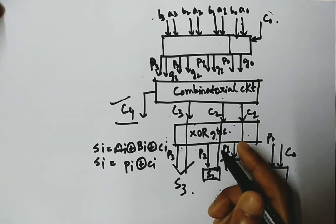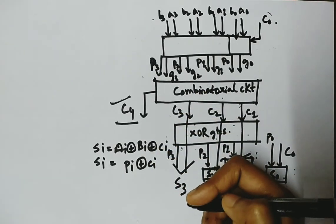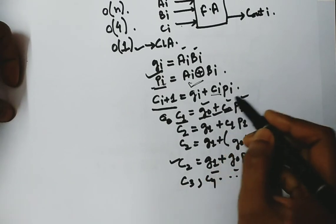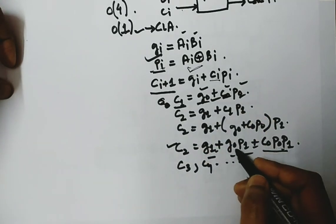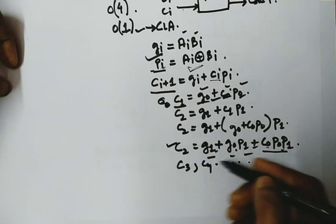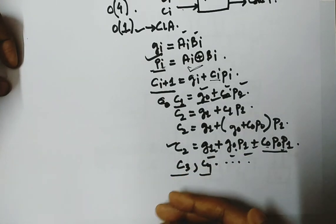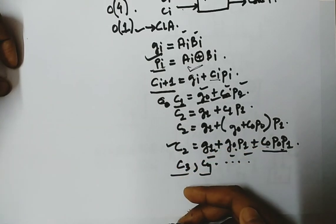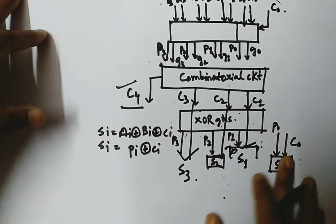But the only drawback of this is the large number of gates, that is hardware required. Here we can see that C1 is an OR gate here and an AND gate here required. For C2, two OR gates and two AND gates required. So the number of gates required increases in C3 and C4, and if the adder is of more bits, then for the next successive stages, the number of gates, that is hardware required, is much more. So this is the only drawback here.